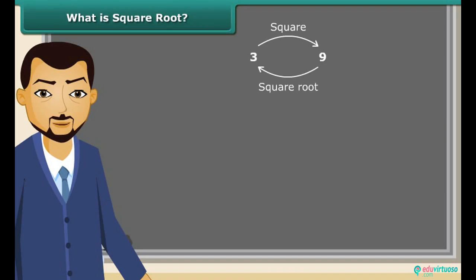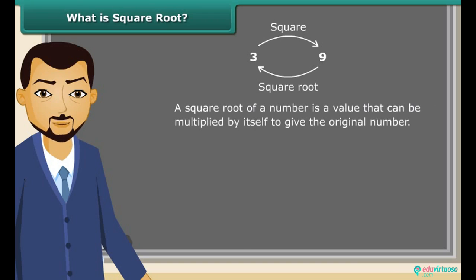Square root is an inverse operation of squaring. It is a value that can be multiplied by itself to give the original number. When 4 is multiplied by 4, we get 16, which means 4 is a square root of 16. A square root is represented by a special symbol called the radical. Square root of 25 is 5.